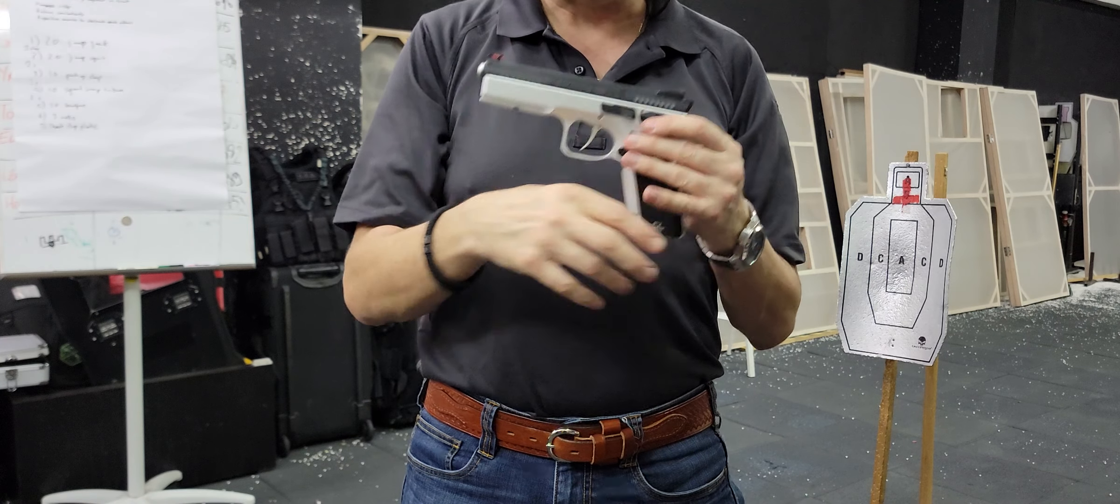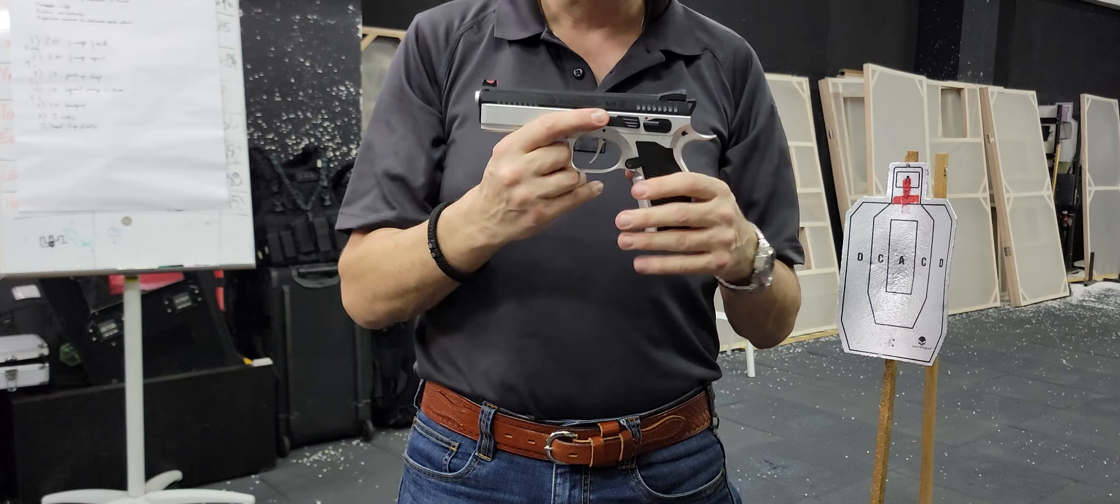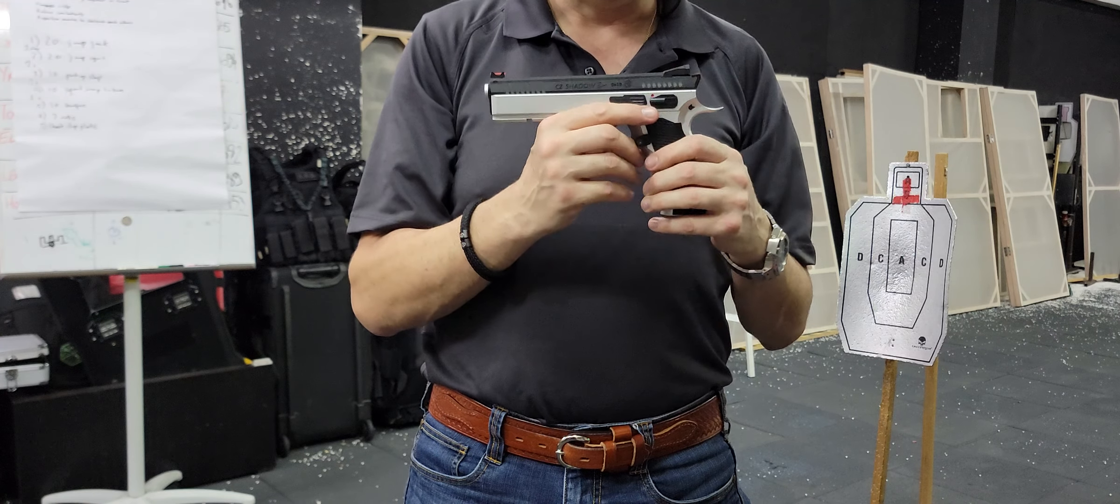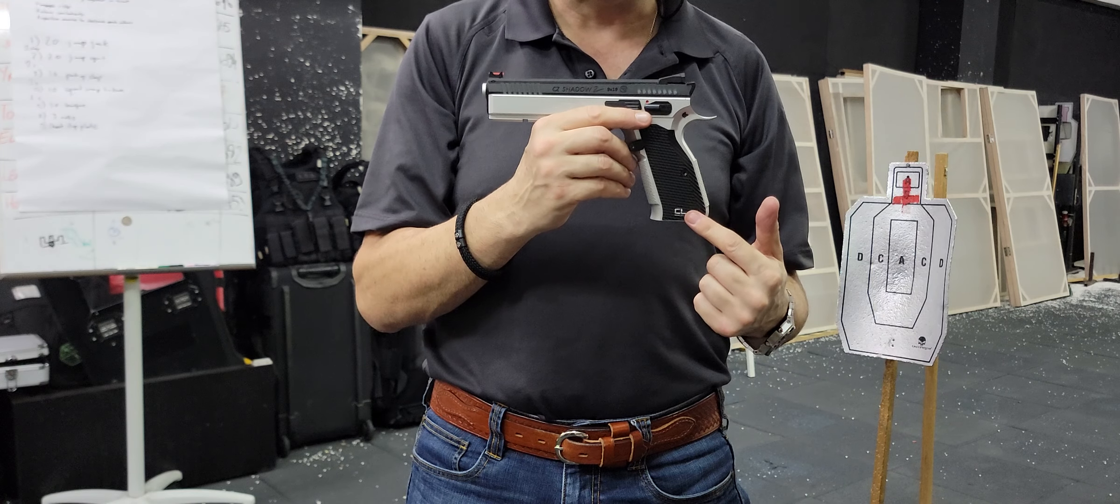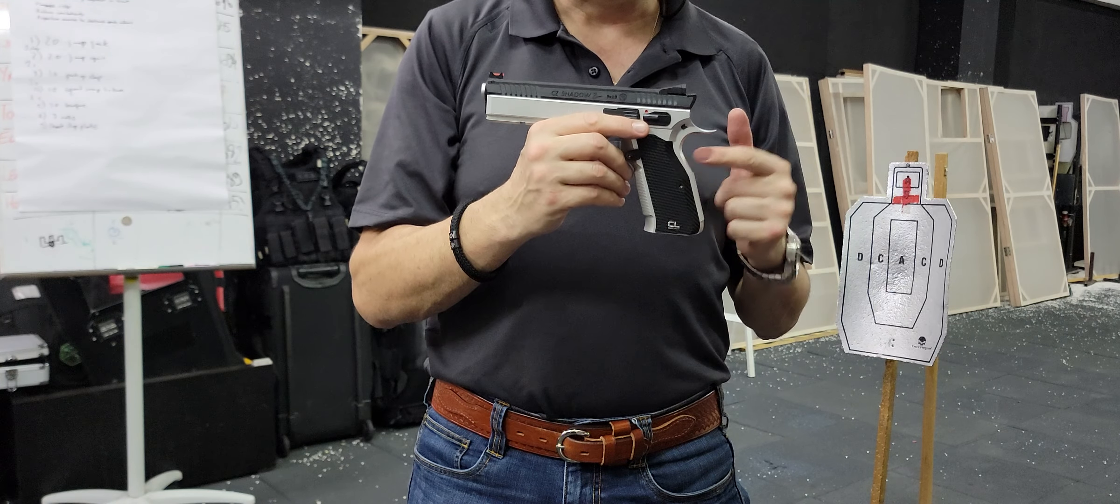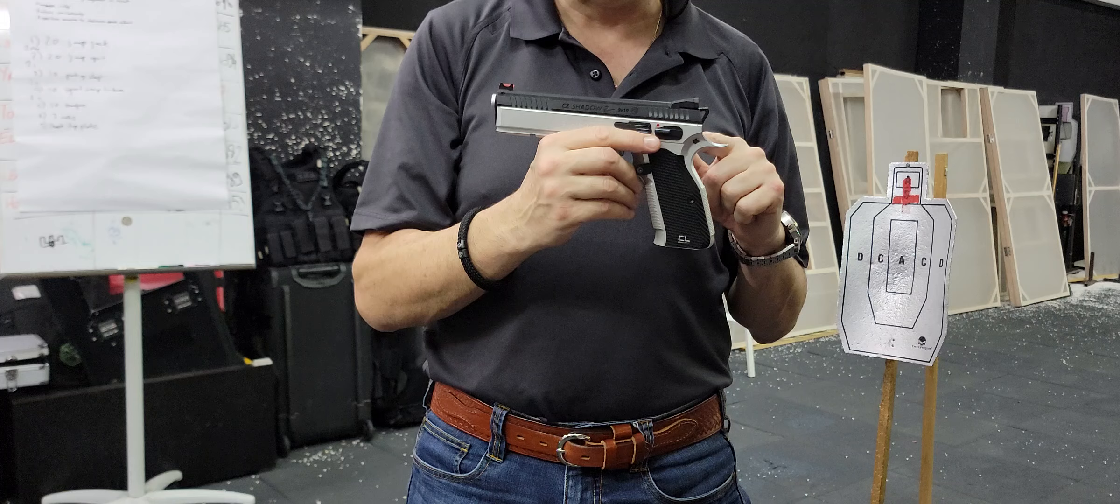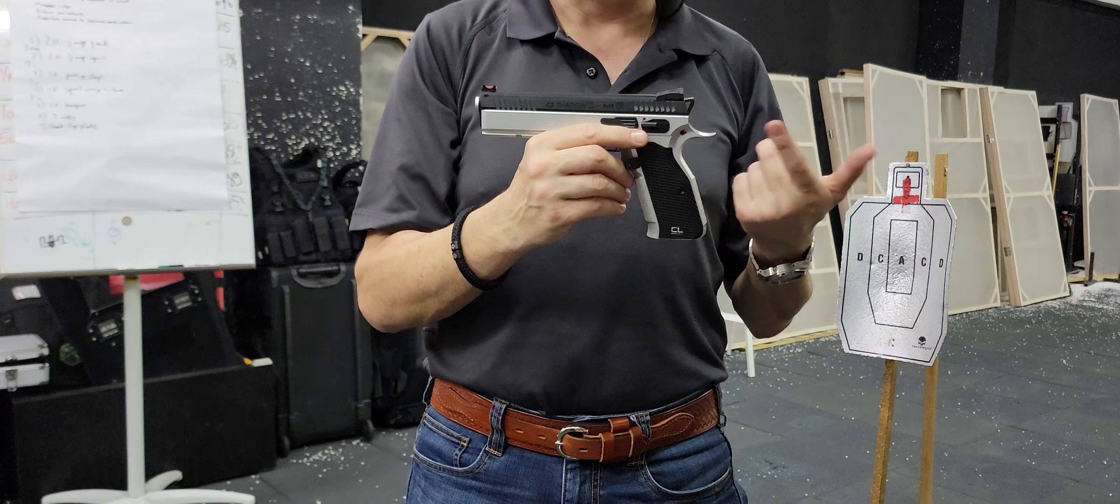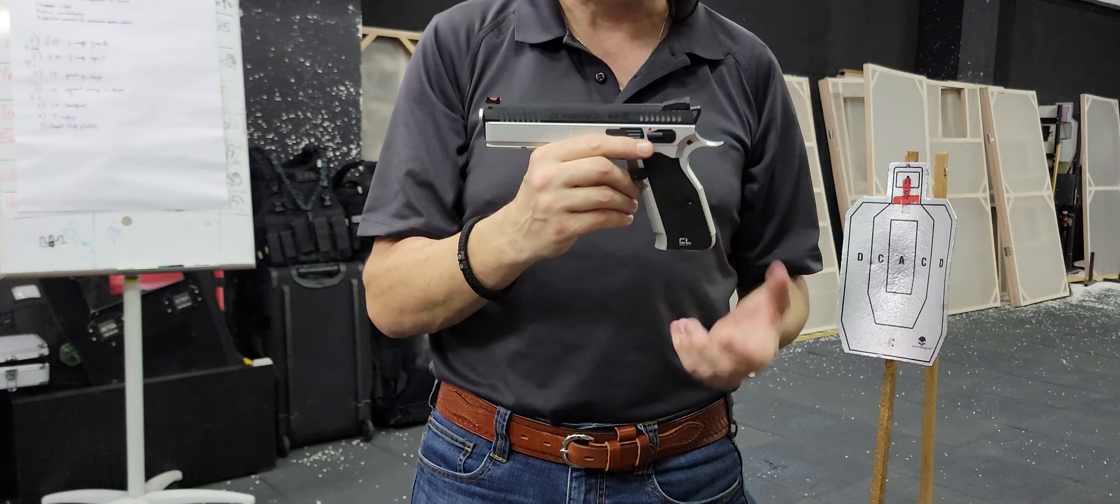On the frame we have the steel slide stop, we have the aluminium trigger, steel trigger bar, steel disconnector, red competition hammer spring, the modified hammer housing, filed magazine lips on the magazine, and the aluminium magazine basically.